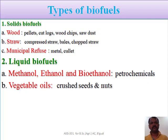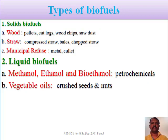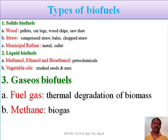The next type of biofuels is liquid biofuels. Under liquid biofuels we have numerous biofuels like methanol, ethanol, and bioethanol. These types of biofuels are alternatives for fossil fuels and we are using biodiesel as one of the petrochemical products similar to the petrochemical products. Another type of liquid biofuel is vegetable oils, particularly from different crushed seeds and nuts, and that we are using as biofuels.